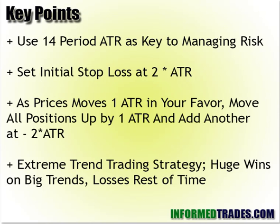As price moves one average true range in our favor, we move all of our stop losses up by one average range and we add a new position that's two average ranges away. This strategy is meant to ride and get the most out of trends — it's an extreme trend trading strategy. For the really great trends where the market goes parabolic, this is the way to get the most out of that. As part of that, you are going to have to endure many small losses. Your win rate is very low, but the wins are going to be extremely large relative to losses if you execute right. It requires a lot of discipline as well as being comfortable with this type of strategy.